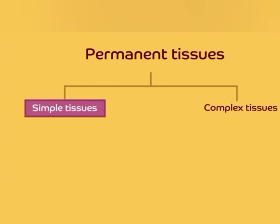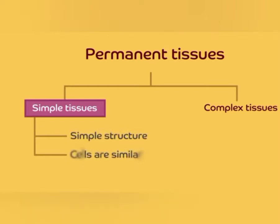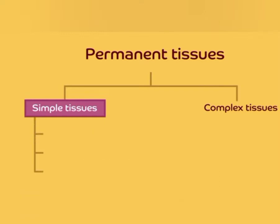The simple permanent tissues are very simple in structure and all the cells are similar to each other. They all work together for a common function. Simple tissues are majorly classified into supportive tissues and protective tissues. There are three types of supportive tissues namely parenchyma, colenchyma and sclerenchyma.